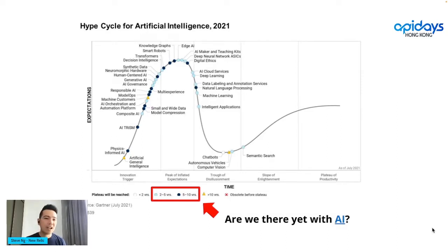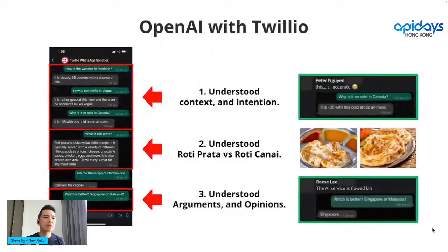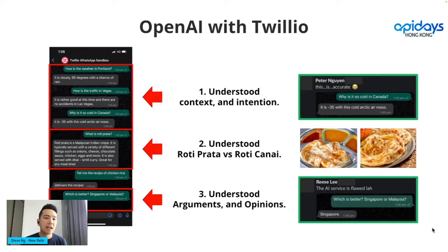This is API Days, and rest assured, everything I'm going to mention today is API driven. Even the AI I mentioned, OpenAI, is actually API driven. I've been looking at AI and data for a long time, and I always want to ask: are we there yet? Is this the right time where engineers can take it seriously and leverage what I call democratized AI service? I'm happy to say, even through my personal experimentation, it looks like this year could be a good one.